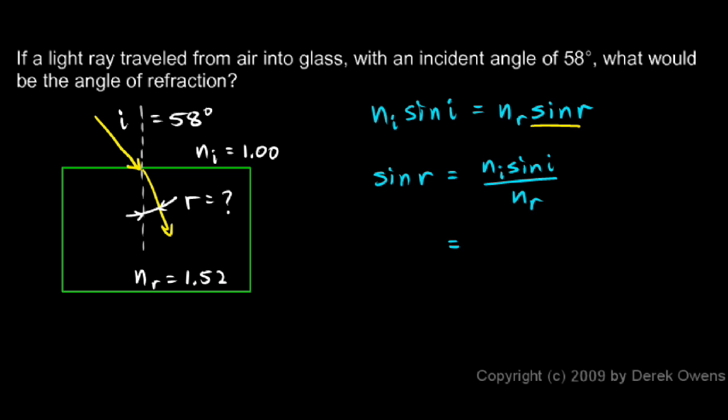So n_i—what is n_i? The index of refraction where the incident ray is, that's 1.00. Now sine of i, what is that? Well, i is 58 degrees, so this is 1.00 times the sine of 58 degrees.